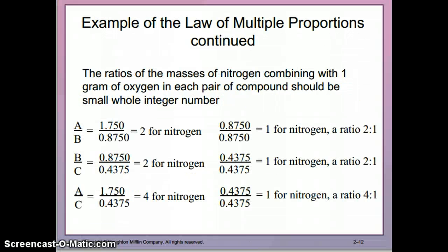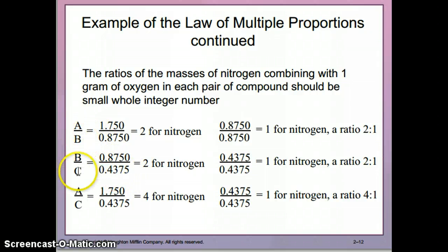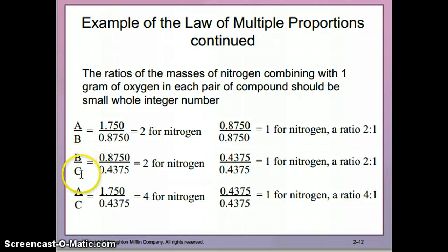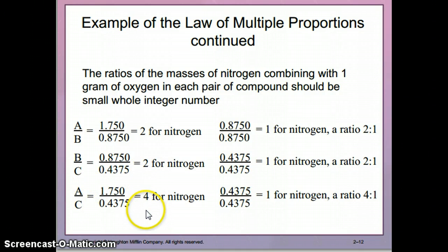Going back to the numbers: the masses of nitrogen were 1.75 (compound A), 0.875 (compound B), and 0.475 (compound C). When we divide these, the ratio of compound A to compound B is 2 over 1. Dividing B by C also gives 2 over 1. And dividing A by C gives 4 over 1. These are all ratios of integers.